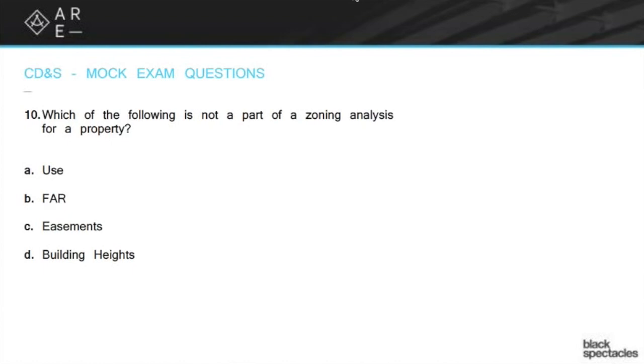But a site analysis would include all of them. A zoning analysis would include A, B, and D. So the big issue we're going to have here is easements because that's not necessarily part of the zoning code.